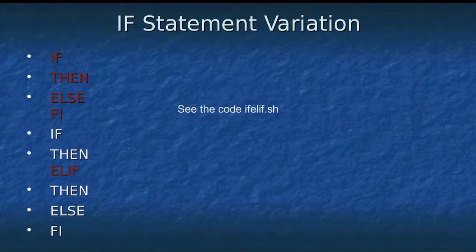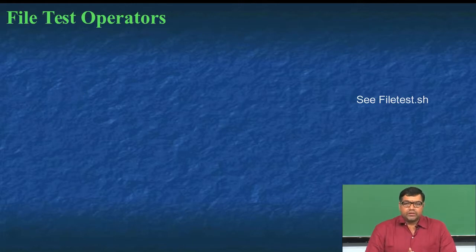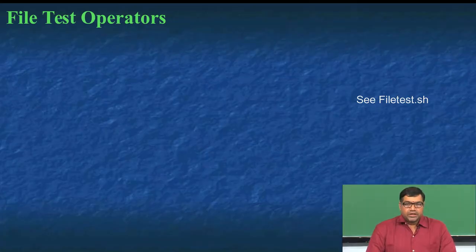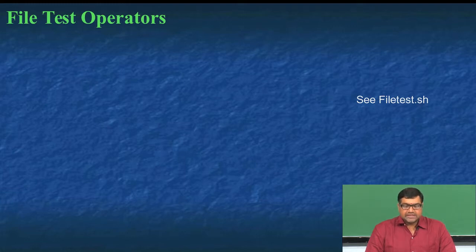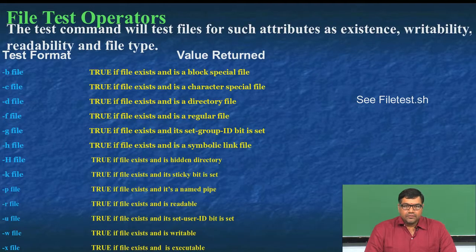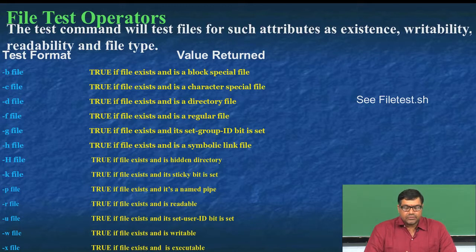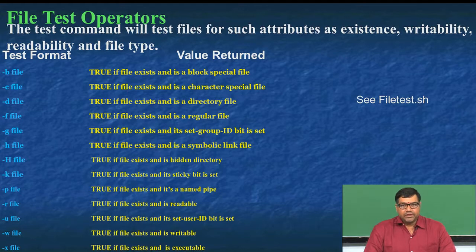Moving on — so far in the if statement we have been only doing comparison operators with numbers. What we will try to do now is see whether we can do file check operations. One of the things with shell scripting is that the conditions inside the if statement need not be only numeric. As long as the condition is boolean, the if statement will work. In most cases in shell scripting you may be playing with files or strings rather than numbers. In forthcoming classes we will see how to handle strings; currently we will understand file test operators used inside the if statement.